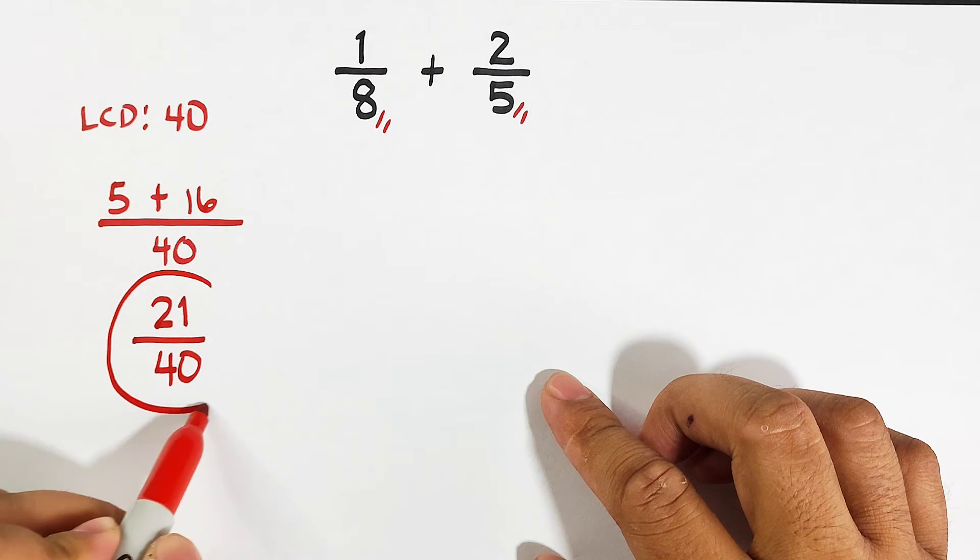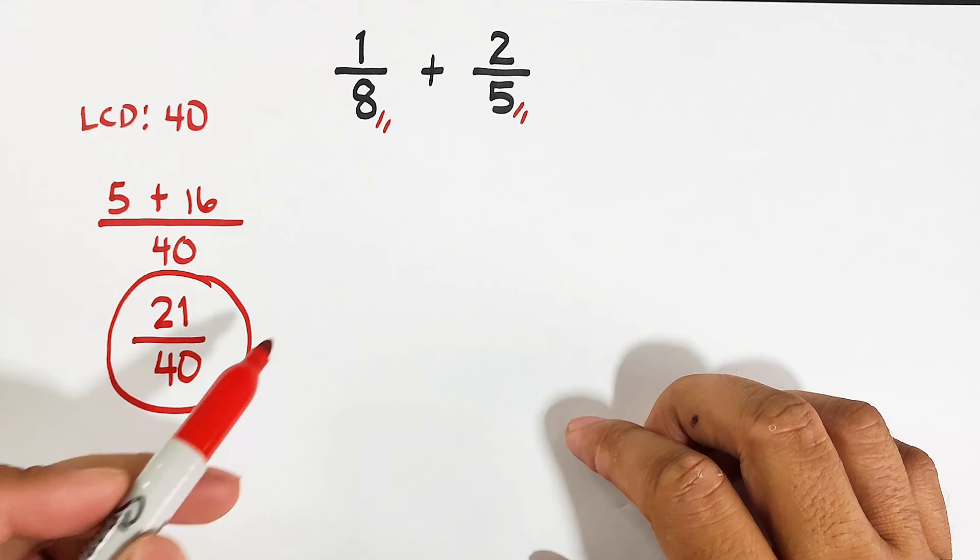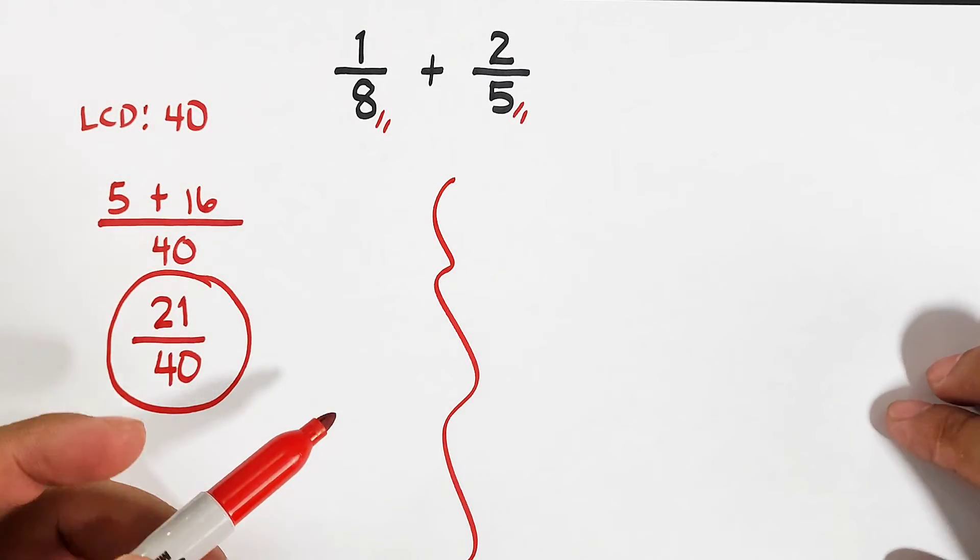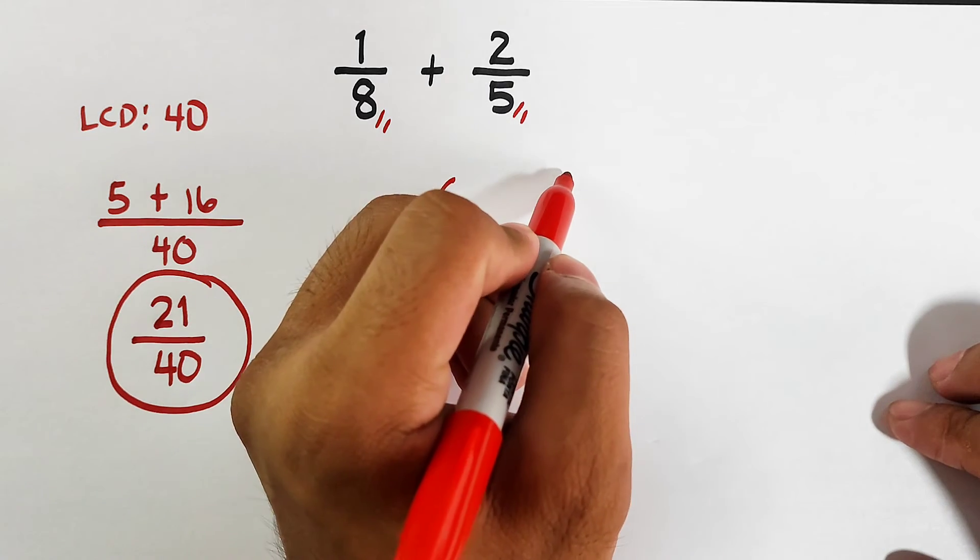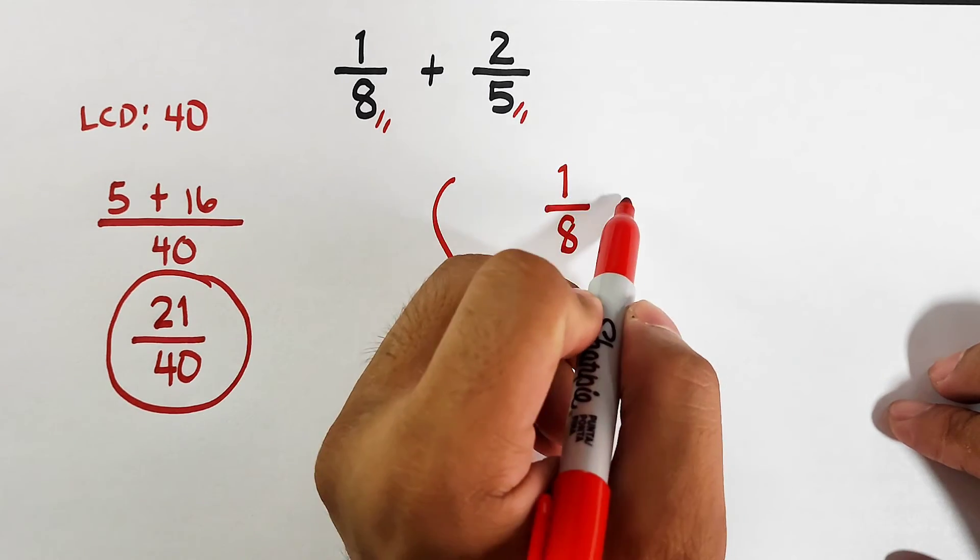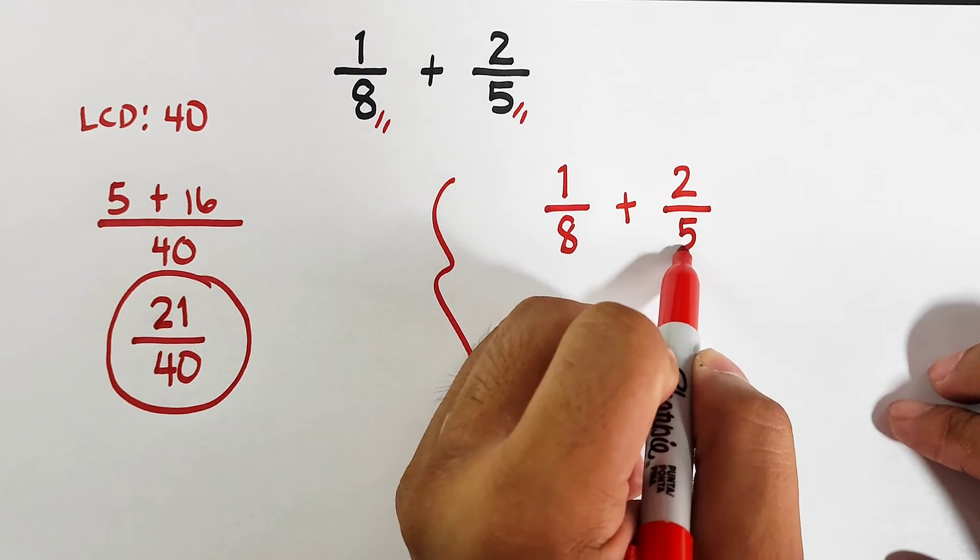Now what about the second method without the use of LCD? What we need to do, I will copy first the given fractions: 1 over 8 plus 2 over 5.